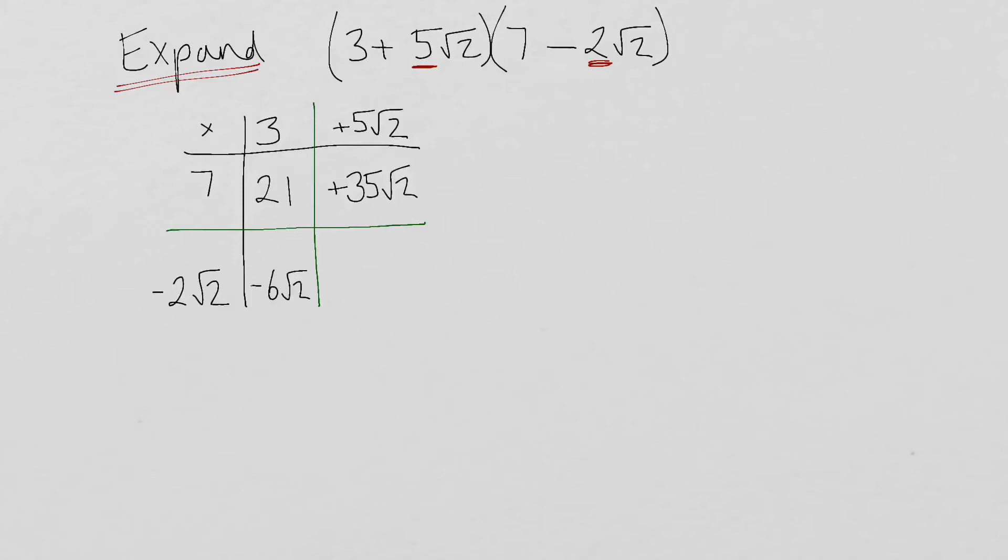I've got positive 5 times by negative 2. So that's going to be negative 10. Then I've got a √2 times by a √2. And we know that √2 squared is just going to provide us with a 2. So that's going to give me times by 2. So that bracket overall there is minus 20.